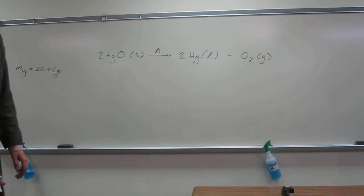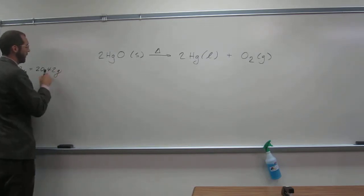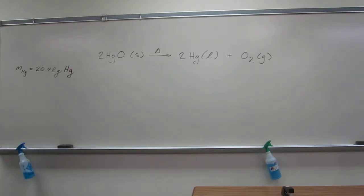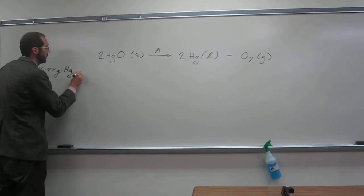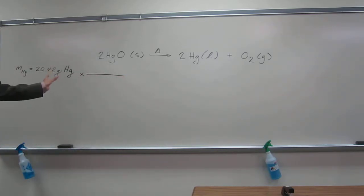Okay, so we're going to do this problem. The first thing I have to do is convert. So this is 20.42 grams of mercury. If you don't know that, then you're already floundering. I've got to convert this to number of moles. What's the conversion factor? The molar mass, right? I know you guys remember that.